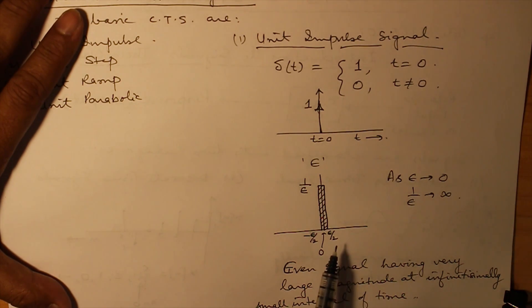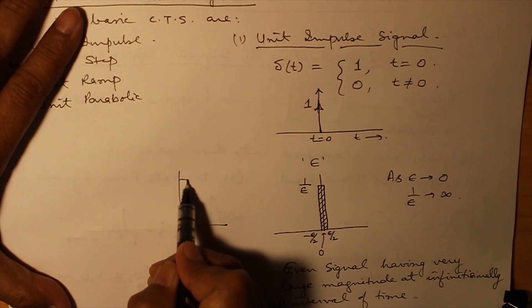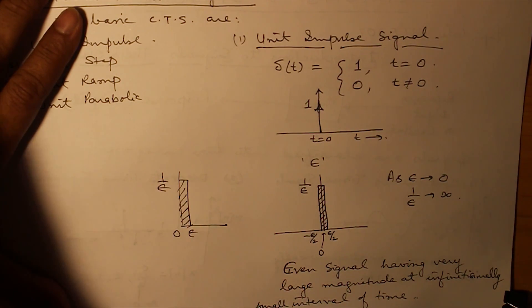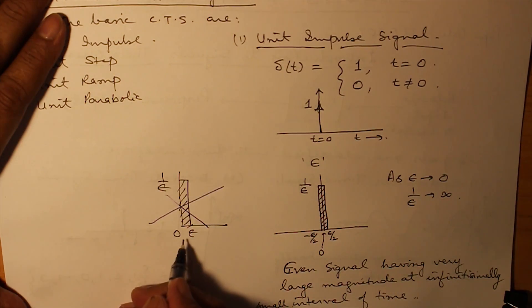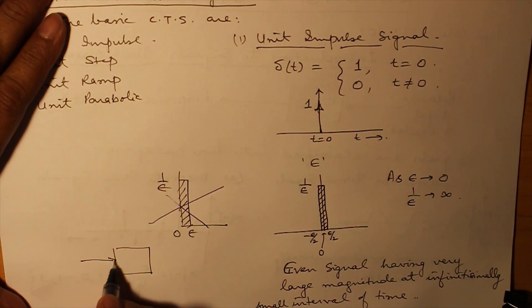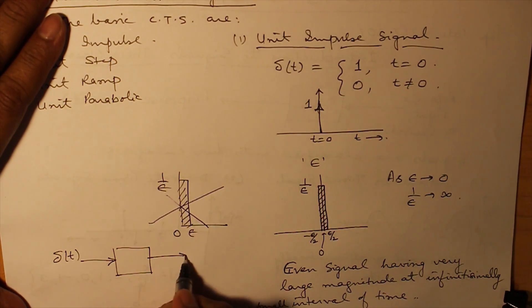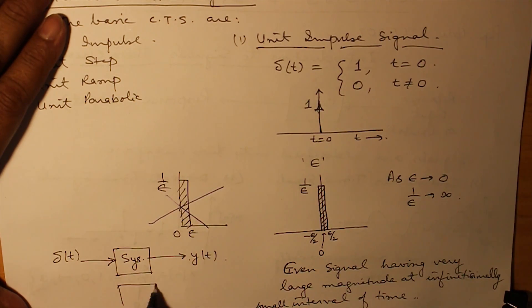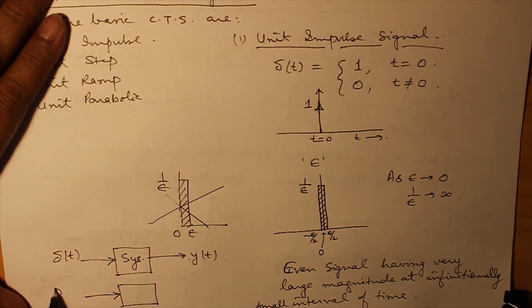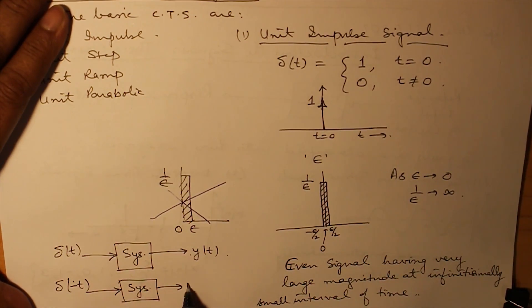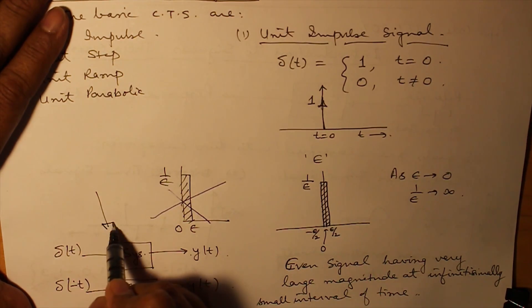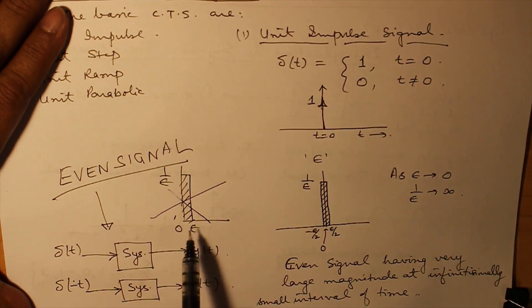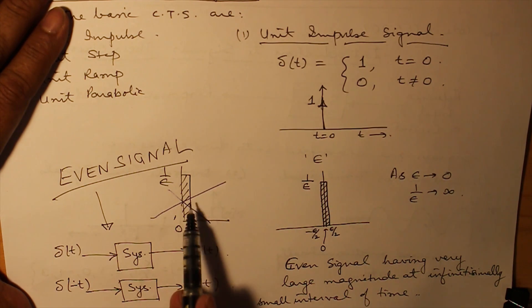Sometimes you will find this signal as wrongly being represented as 0 epsilon and 1 over epsilon in many of the books. This is a wrong representation. It is because when on a system, an impulse signal is applied and this system is an LTI system, whatever output you obtain, the same output is obtained if you apply delta of minus t, thereby dictating that an impulse signal is an even signal. And this representation is that the impulse signal is neither even nor odd which is a wrong representation.